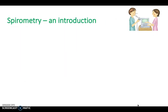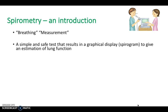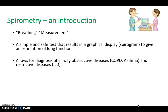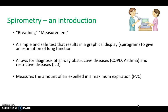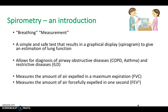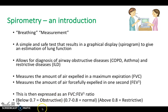A brief introduction to spirometry — it measures breathing and produces a spirogram giving an estimate of lung function. It allows diagnosis of obstructive diseases like asthma and COPD, or restrictive diseases such as interstitial lung disease. It measures forced vital capacity (FVC) — how much air you can blow out maximally — and FEV1, the air forcefully expelled in the first second. Expressed as a ratio: below 0.7 is obstructive, 0.7–0.8 is normal, and above 0.8 suggests restrictive lung disease.